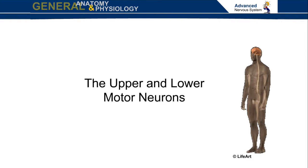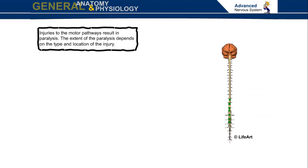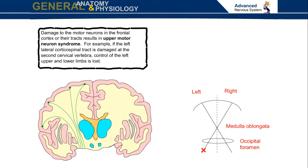The upper and lower motor neurons: injuries to the motor pathways result in paralysis. The extent of the paralysis depends on the type and location of the injury. Damage to the motor neurons in the frontal cortex or their tracts results in upper motor neuron syndrome.